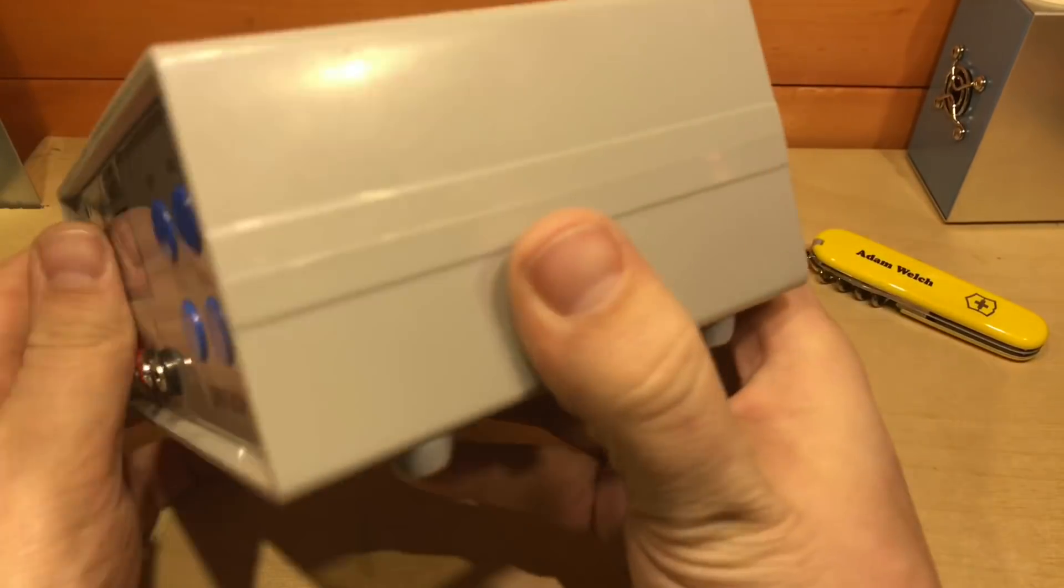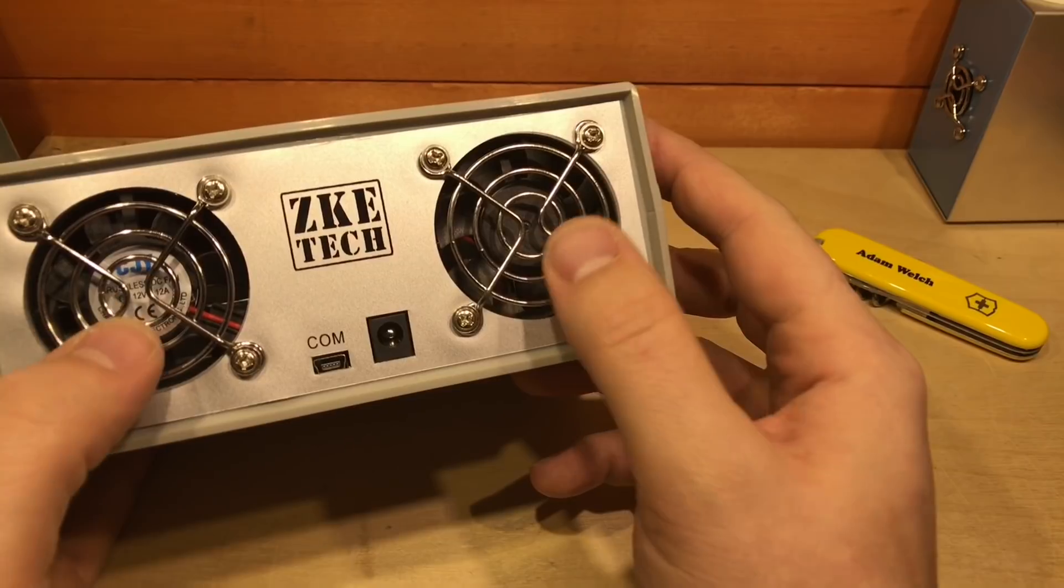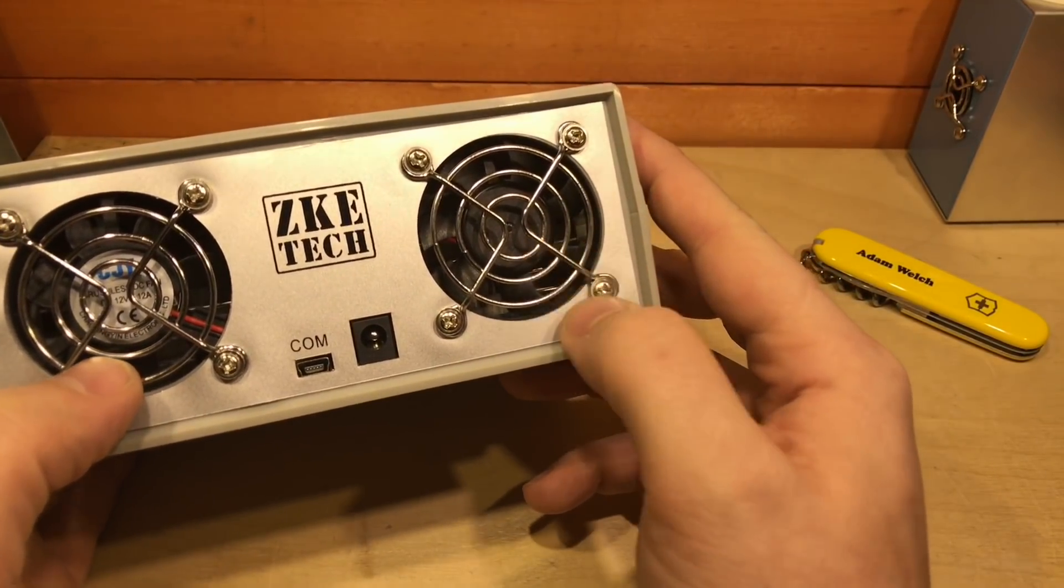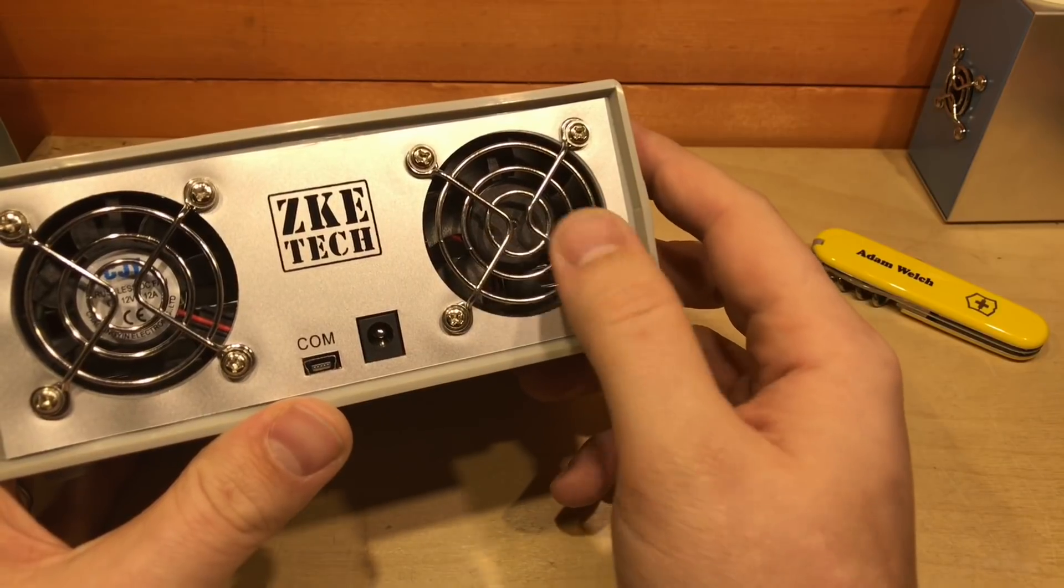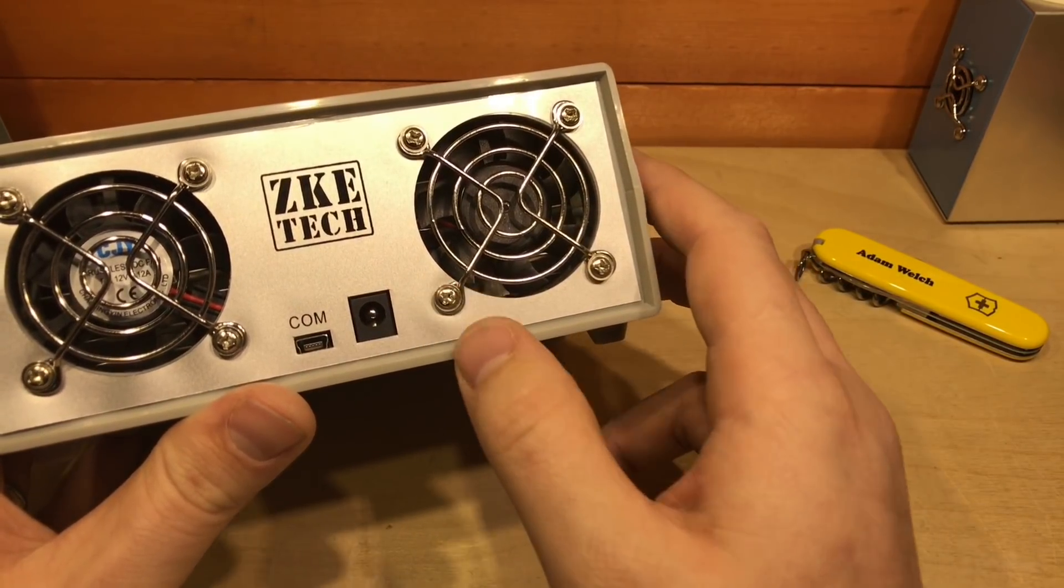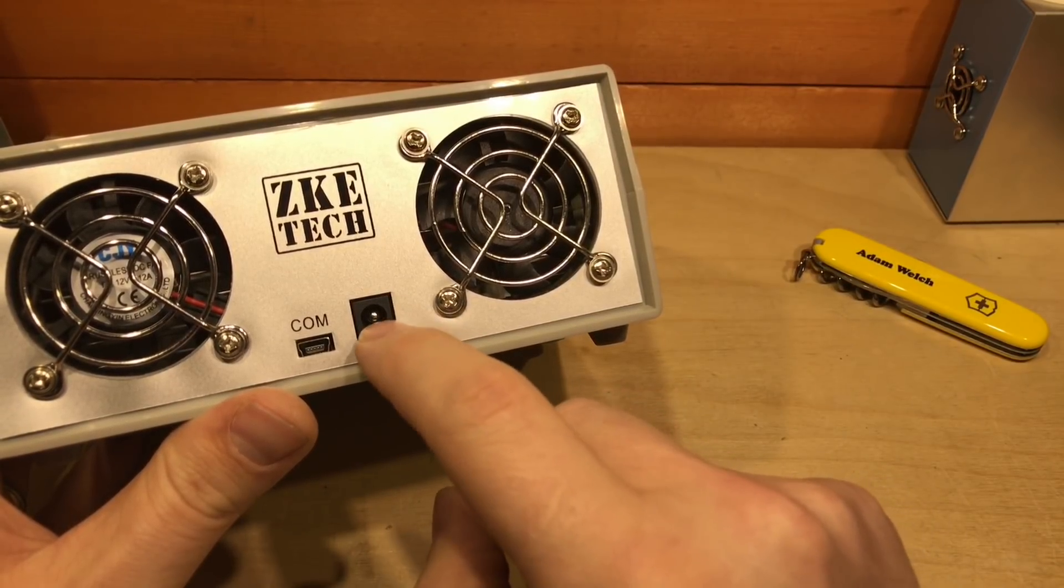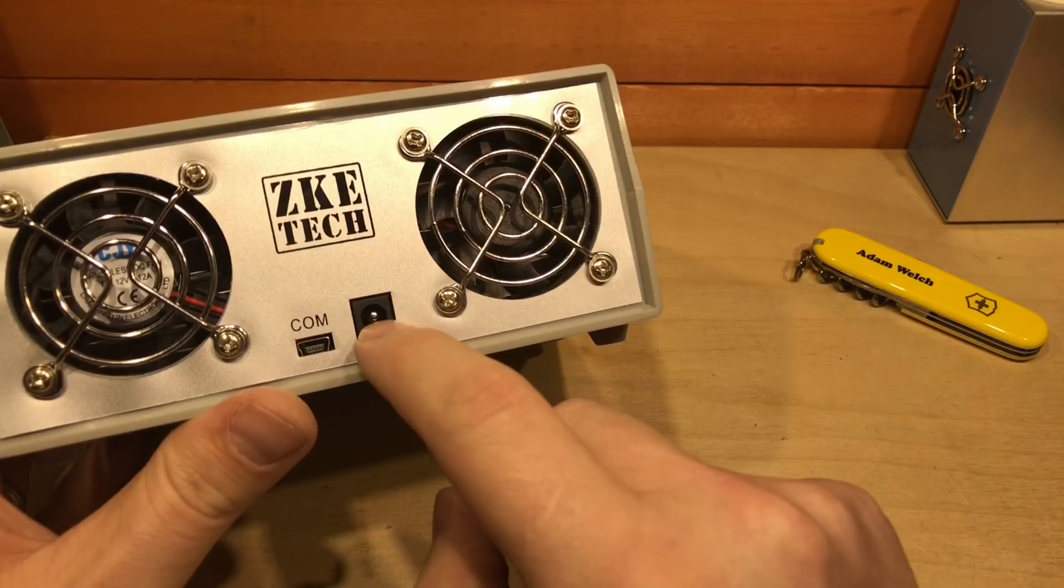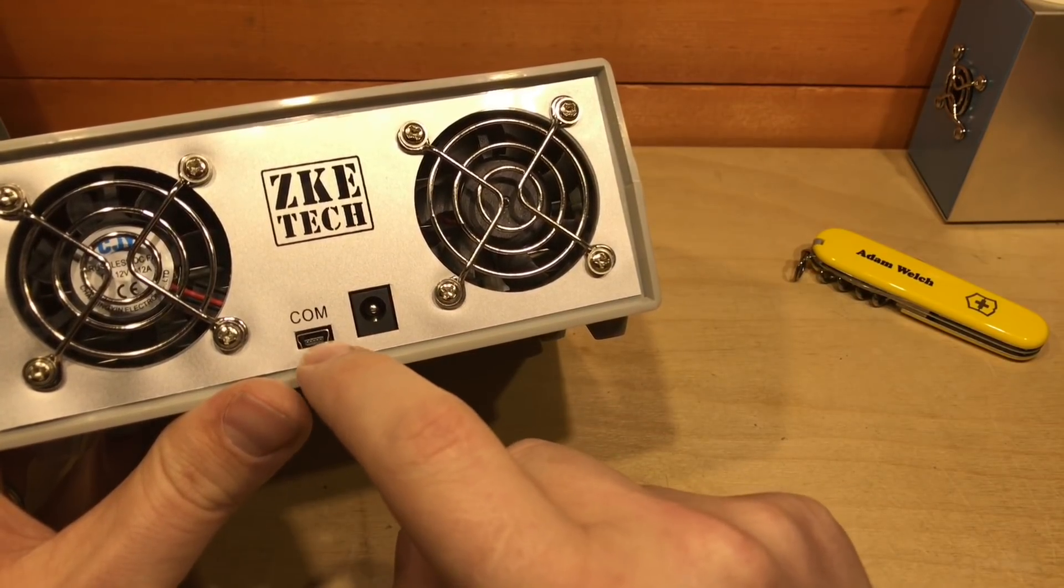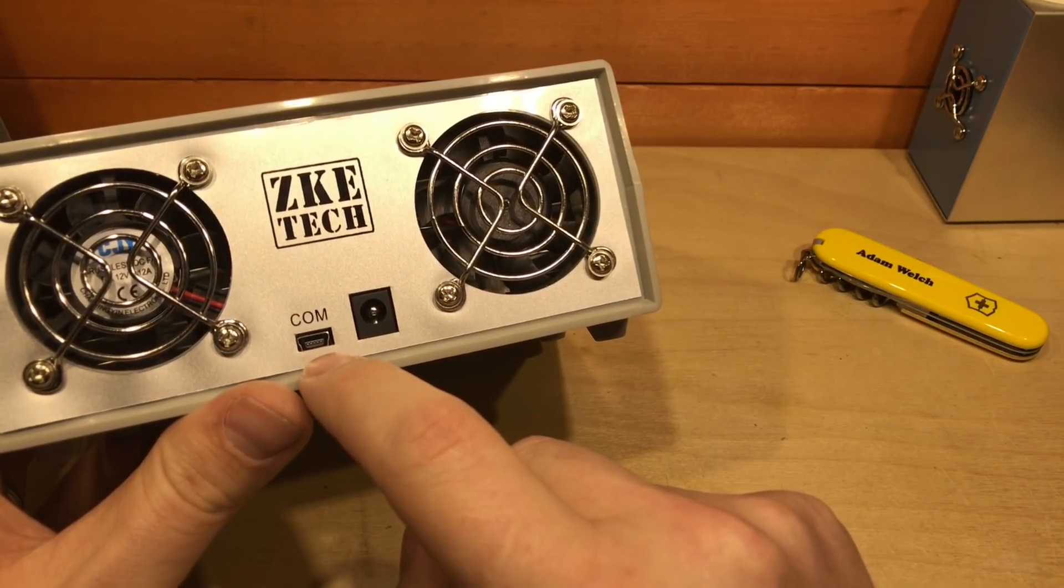On the back here, there are two grills, two fans, and they're facing the opposite way, so one is to suck air into the unit and one is to expel that warm air. A barrel jack connector on the back, which unfortunately isn't 5.5 by 2.1, it's a slightly different measurement. I'm not entirely sure what that is, and then a communications port here which is a mini USB connector.